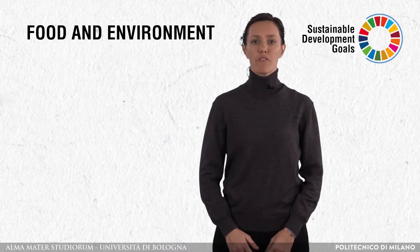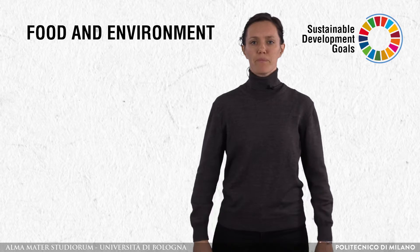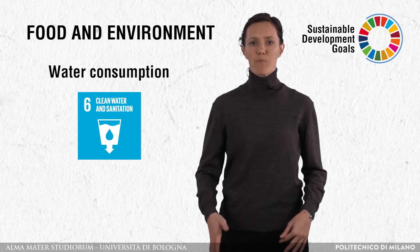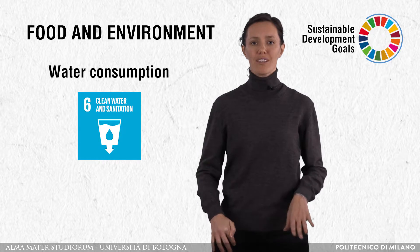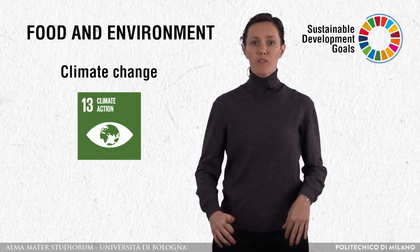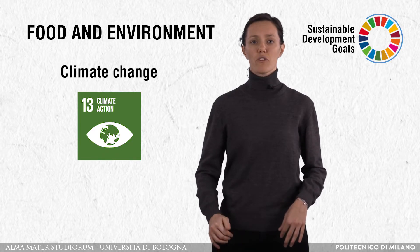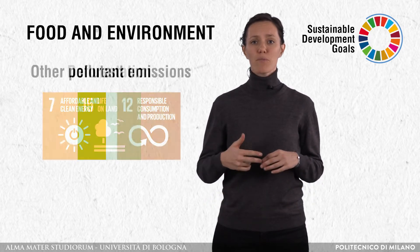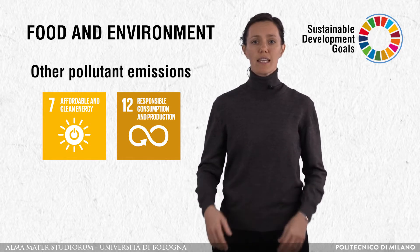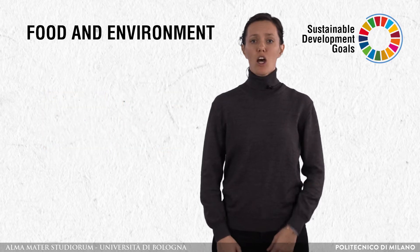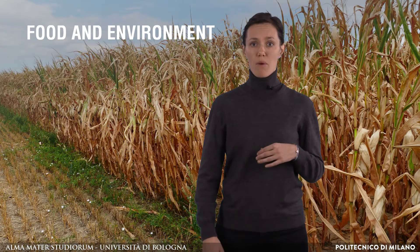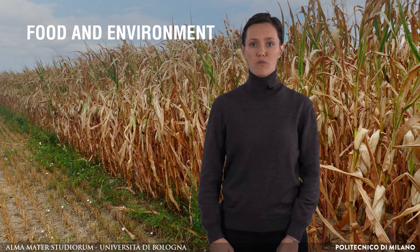The second important dimension in the food system is the environmental one. From agriculture until consumption, food is affecting the environment. The production of food is among the measures responsible for water consumption, since between 60 and 85% of national water withdrawals are due to agriculture alone. Then we have climate change, with agriculture and food production contributing to a great fraction of global greenhouse gas emissions. Then we have fish stock exploitation, deforestation and other pollutant emissions, linked to energy use, transportation, industrial processes and food storage. On the other hand, these environmental impacts cause a direct negative feedback on agriculture, which is among the most affected sectors by climate change and natural resource scarcity.